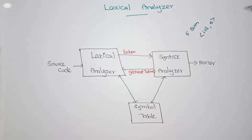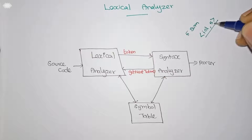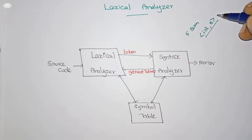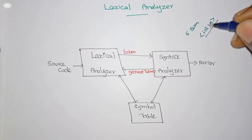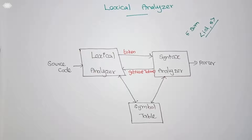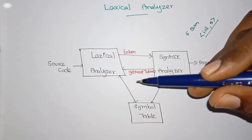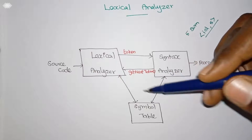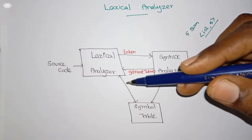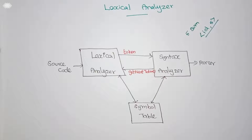For example, if 'sum' is stored in the symbol table at the fifth position, it returns 'id, 5'. This is called a token — 'id' is the token and '5' is the attribute that specifies information regarding the identifier. So the lexical analyzer works hand in hand with the symbol table.